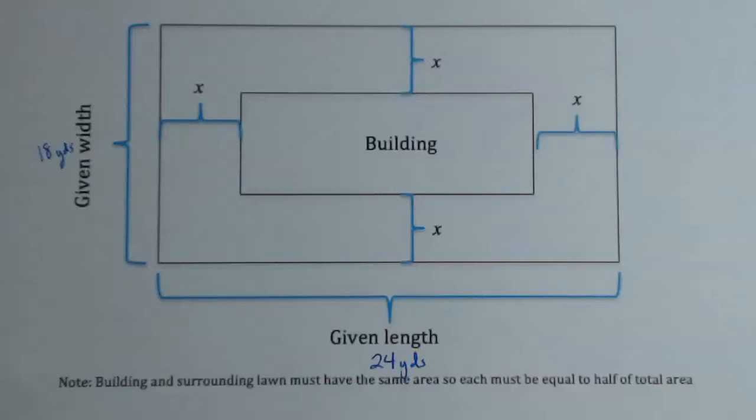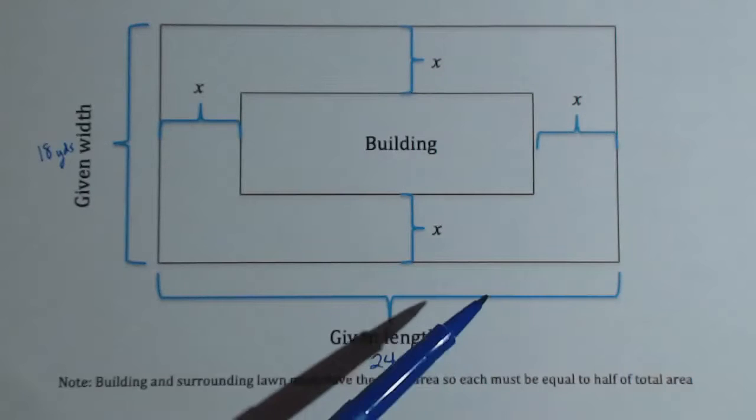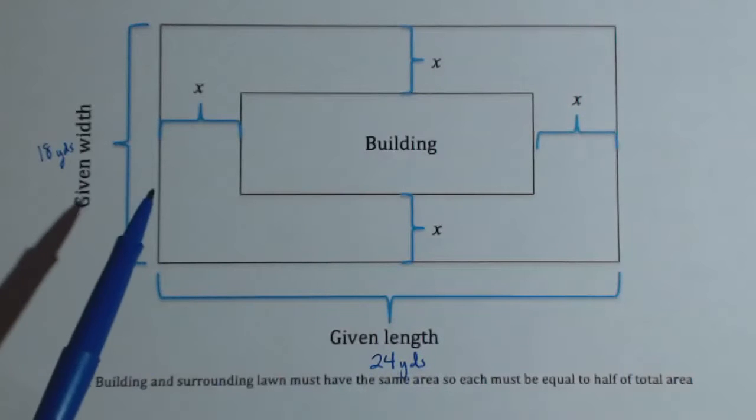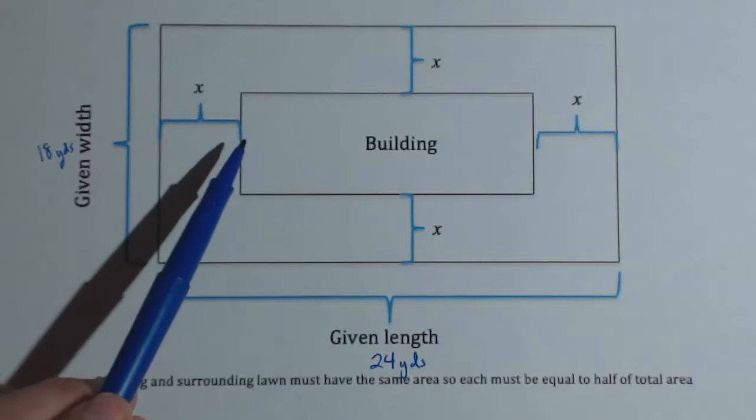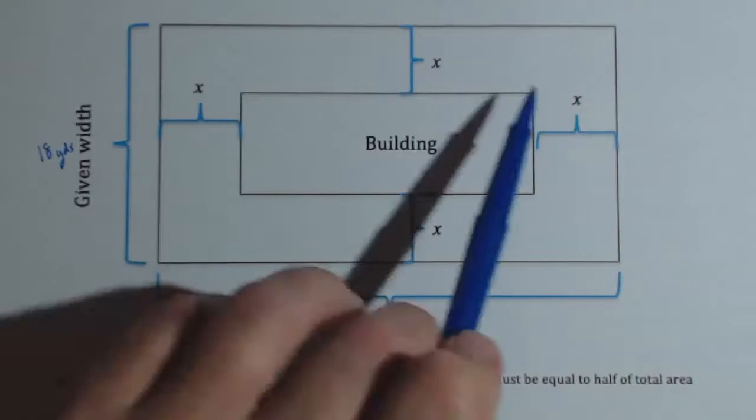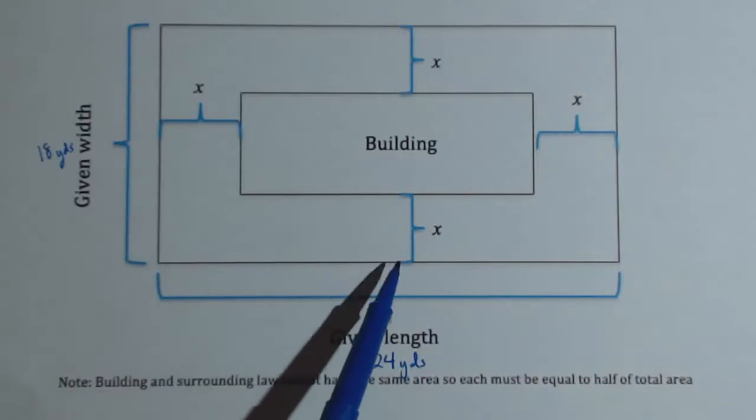So we're given a lot, and we know that the area is split up so that the building takes up the same amount of area as the lawn around, which has a uniform width, which is why they're all marked X.